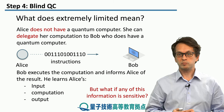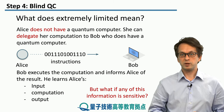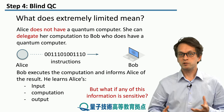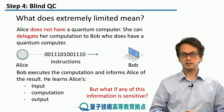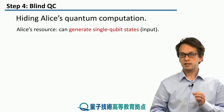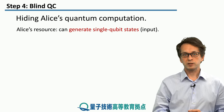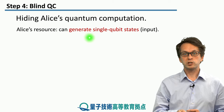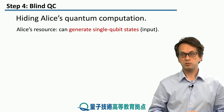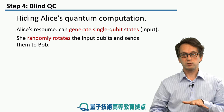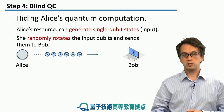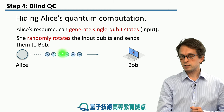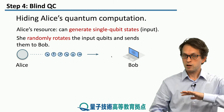What if Alice doesn't want Bob to learn some — or any — of this information? Maybe she's trying to gain a competitive edge by performing some simulation of a molecule or a new material and doesn't want Bob to find out because it's a trade secret. Well, she can protect her information if she's allowed to have some quantum resources. Particularly, we assume Alice has the ability to generate single qubit states, and what she can do is generate these states and randomly rotate them, then send those qubits to Bob over a quantum channel. These qubits are not entangled — they're really just a bunch of single qubit states randomly rotated.